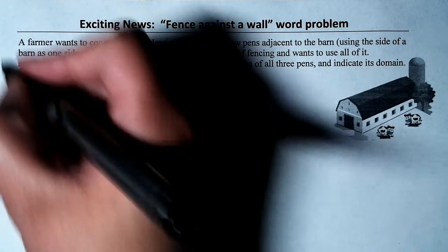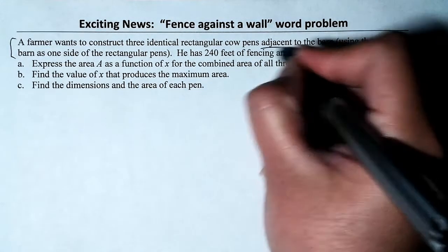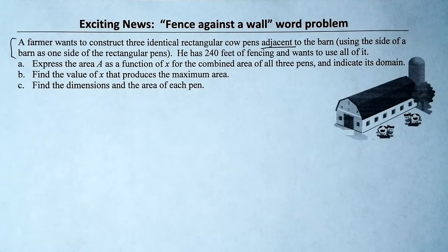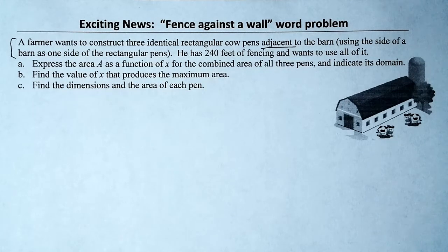A farmer wants to construct three identical rectangular cow pens adjacent to the barn — meaning using the side of a barn as one side of the rectangular pens. He has 240 feet of fencing and wants to use all of it — no leftover material.